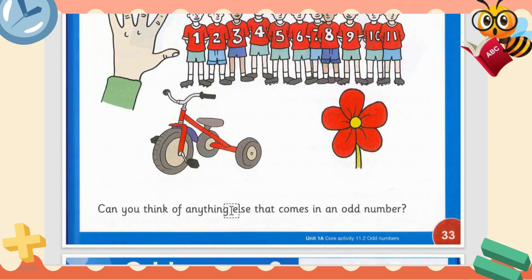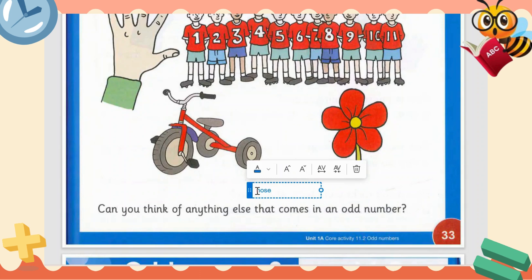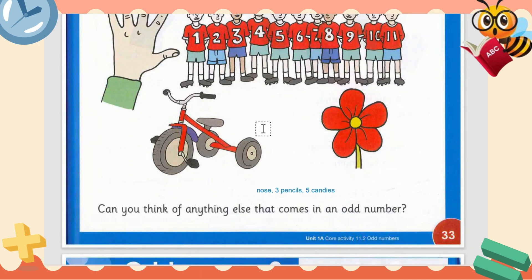Can you think of anything else that comes in an odd number? Our nose — it is only one, so it's an odd number, not in pairs. A tricycle has three wheels — also not a pair. Three pencils — also not in a pair. Five candies — also cannot be in pairs. So these are all odd numbers.